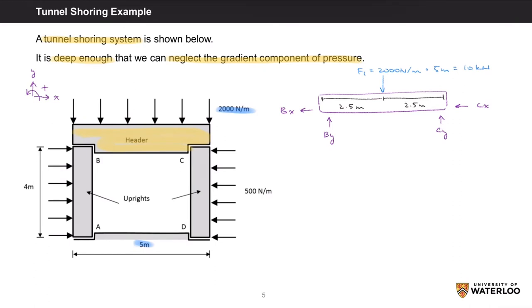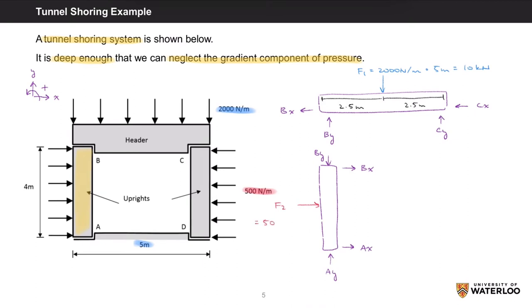Since the reactions at B and C are internal, I'll draw them acting in the opposite direction on the uprights. So the upright on the left will have reactions BY and BX acting downwards and to the right respectively, since they are internal reactions drawn opposite to how they appear on the header. We will also have AY and AX, assumed to act in our positive directions. The distributed load transforms into a concentrated point load F2, acting halfway along the 4-meter height: 500 N/m times 4 meters gives 2 kN.